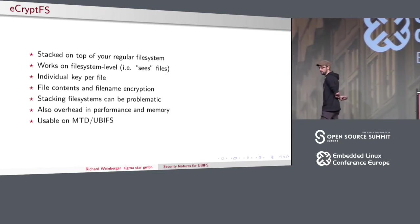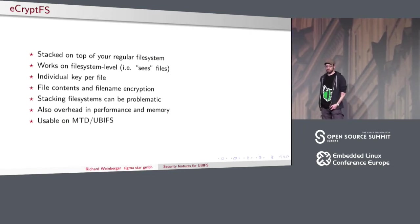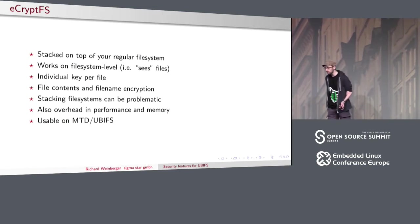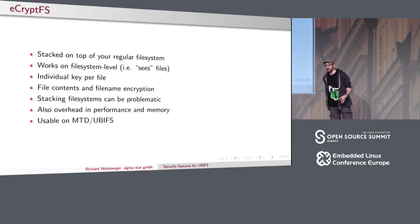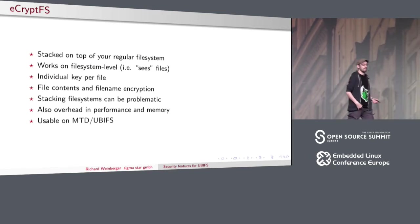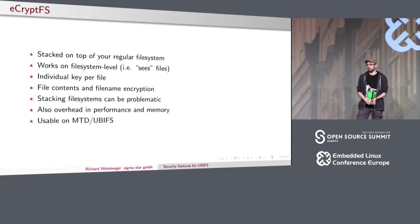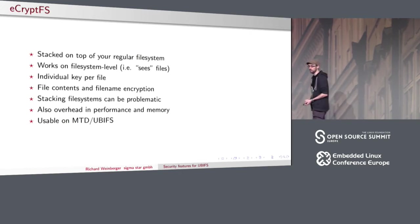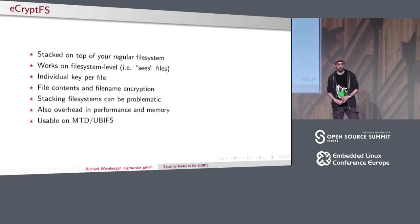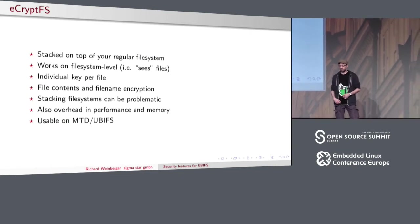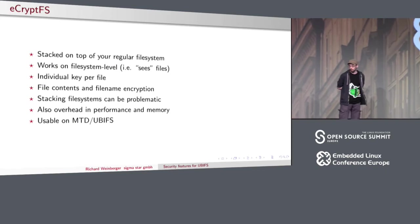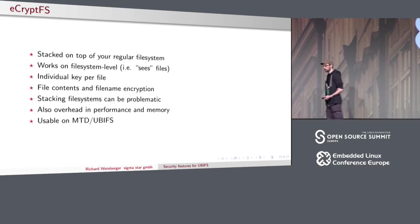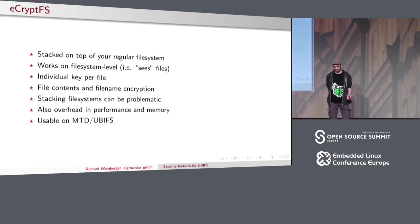Also heavily used is ECryptFS. It's a stacked file system — you have your regular file system such as Btrfs or ext4, and you over-mount ECryptFS on top of it. ECryptFS then does decryption and encryption of each file. The good thing is it has one key per file, so when the encryption key is broken for one file, you only lose the key for that one file. Besides file contents encryption, it also encrypts file names, but not the file metadata.